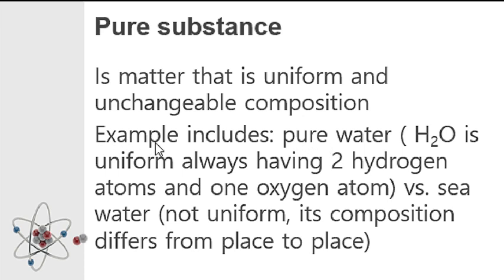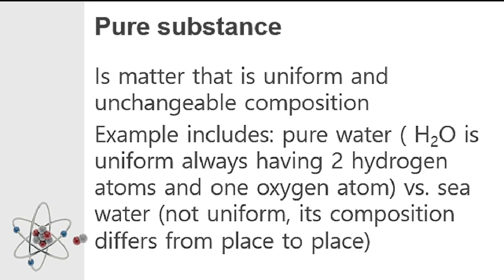For example, pure water has a chemical symbol of H2O, meaning the composition of water is uniform — two hydrogen atoms and one oxygen atom. That is why we call it a pure substance. When we say seawater, this is an example of a mixture, because it is not uniform. The composition of seawater depends on where you collect the water — water from near the shore has a different composition from water farther away.